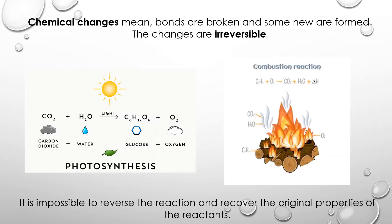Chemical changes mean bonds are broken and some new ones are formed. The changes are irreversible. For example, in photosynthesis, carbon dioxide reacts with water and inside the chlorophyll of the leaves with light to produce glucose and oxygen. This is an irreversible reaction because the products cannot be reversed into carbon dioxide and water. Another example is a combustion reaction — at the end of burning logs, it is impossible to reverse the reaction and recover the original properties of the reactants.